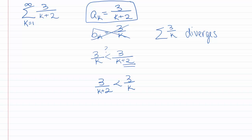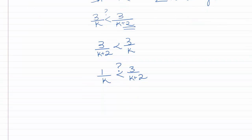What if we try 1 over k? Will that be smaller than 3 over k plus 2? Well, 1 over k is the harmonic series, so we know that diverges. We're going to do something a little bit clever.